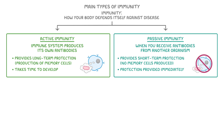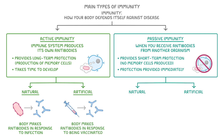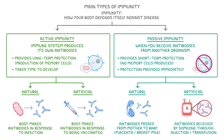Both active and passive immunity can be further divided into natural and artificial immunity. Natural active immunity happens when your body makes antibodies in response to an infection, whilst artificial active immunity happens when your body makes antibodies in response to being vaccinated. Natural passive immunity happens when antibodies are passed from a mother to her baby, usually through the placenta or breast milk, and artificial passive immunity happens when antibodies are received by someone through an injection or transfusion from someone else.